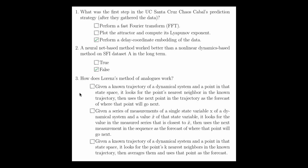The third question is simply, how does Loren's method of analogues work? And this is near neighbor prediction on the trajectory of a dynamical system. So given a known trajectory of a dynamical system and a point in that state space, it looks for the point's nearest neighbor in the known trajectory, then uses the next point in the trajectory as a forecast of where that point will go next. So this first answer is correct.